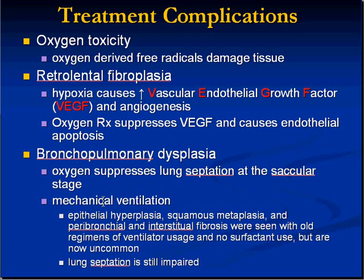This is basically the mechanism. Bronchopulmonary dysplasia is also an oxygen treatment complication. Remember, this is not pre-malignant dysplasia — this is abnormal organization of cells due to the fact that oxygen suppresses septation and development of the lung in the later stages when you're getting alveoli. Mechanical ventilation is also related to epithelial hyperplasia. So bronchopulmonary dysplasia is secondary to oxygen suppressing lung septation as well as mechanical ventilation problems regarding septation.